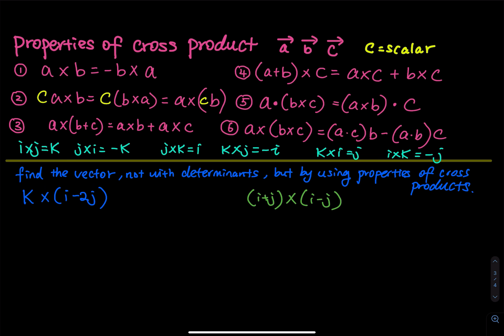The last one is not so obvious. You have A cross product (B cross C). That equals A dot C times B, minus A dot B times C. Now let's take a look at a few more properties for the standard basis vectors i, j, and k.